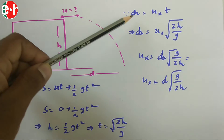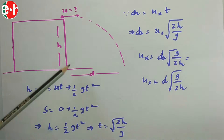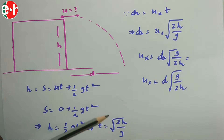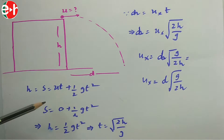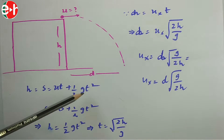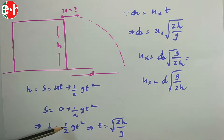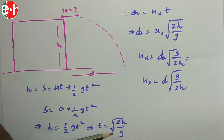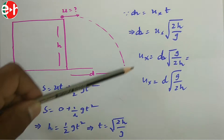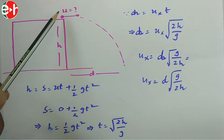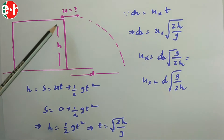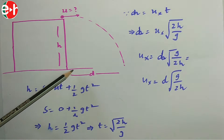H is the height and D is the range. Using the range formula R = Ux·t, and finding time from vertical displacement: H = ½g·t², giving t = √(2H/g). This is a standard formula — remember T = √(2H/g). The time taken for vertical displacement and the time for the range are the same.